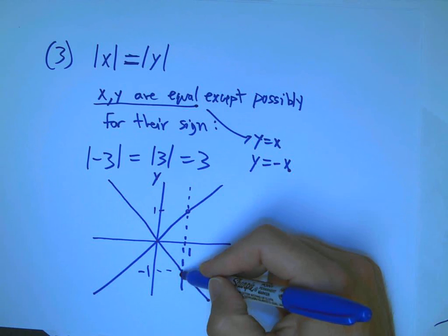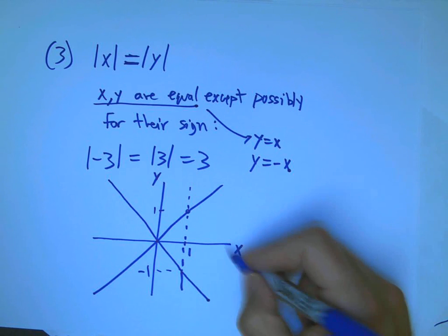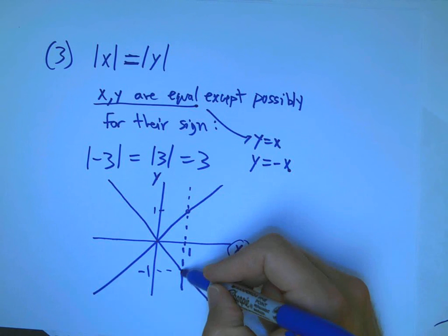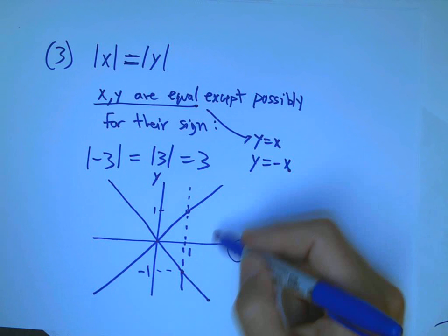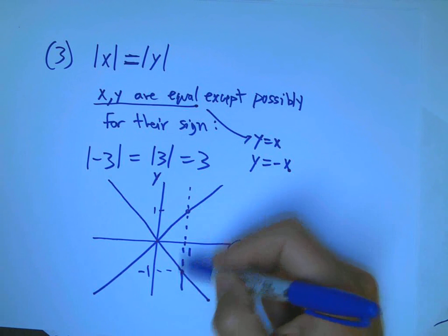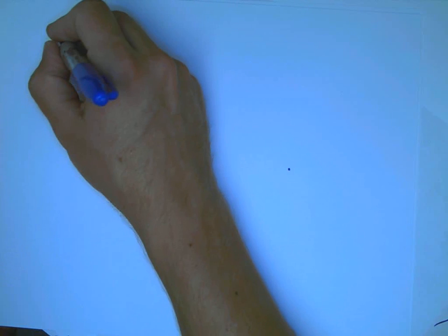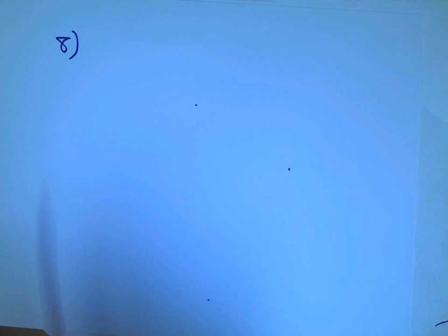That definitely doesn't pass the vertical line test because x equals 1 could match with y equals 1 or y equals minus 1, both. And so, because there's a certain input, I mean, if I insist on thinking of x as the input and y as the output, yeah, I can do that, but I'm not going to get a function out of it because to one input, x equals 1, I produce two outputs. And so, that's another example of something that's just a relation.